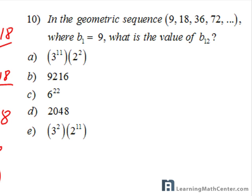Problem number 10. In the geometric sequence 9, 18, 36, 72, and so on, where b1 is equal to 9, what is the value of b12, or the twelfth term of the sequence?